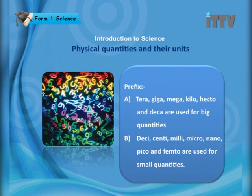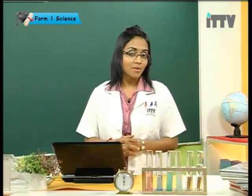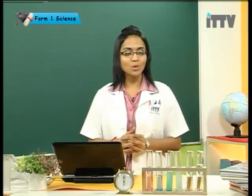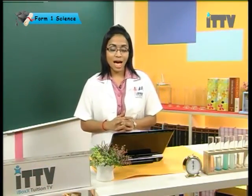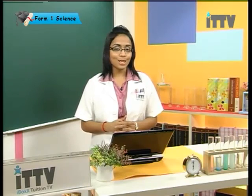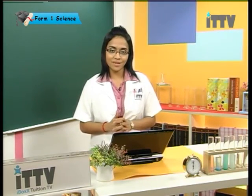Prefixes come in two forms: tera, giga, mega, kilo, hecto, and deca for big quantities; and desi, centi, milli, micro, nano, pico, and femto for small quantities. Remember all the prefixes and how to use standard form. Today's lesson was about physical quantities and their units. Thank you for watching ITTV — take care and bye.